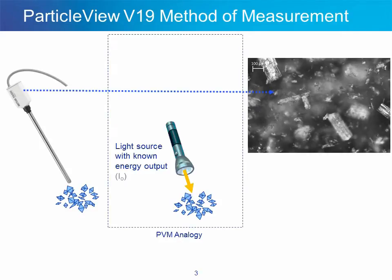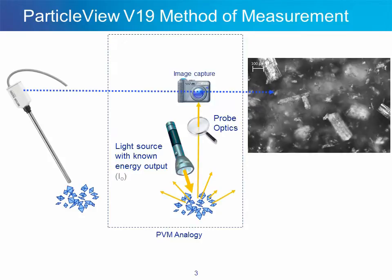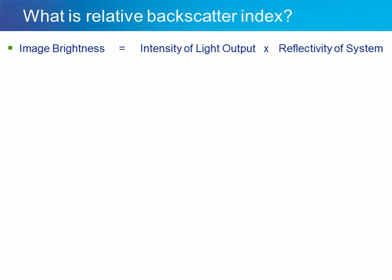An internal light source illuminates particles directly in front of the probe window. The light gets scattered back up through the probe and the probe optics, where a camera captures the image. Each image that is captured is of a known brightness — this image brightness is equal to the intensity of the light sent out through the probe multiplied by the reflectivity of the particle system.